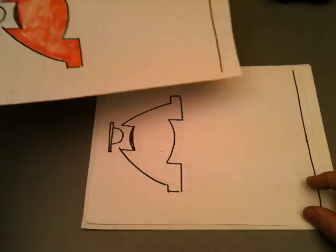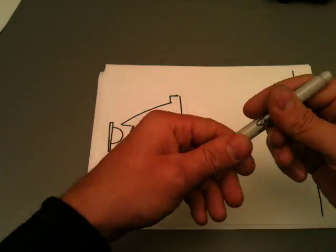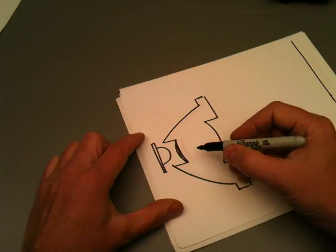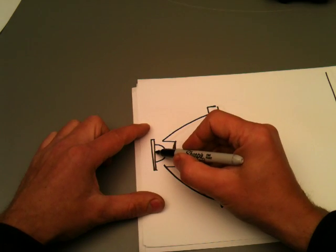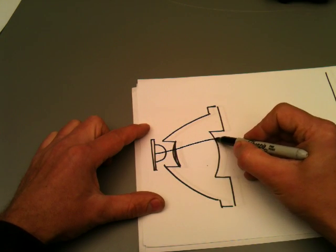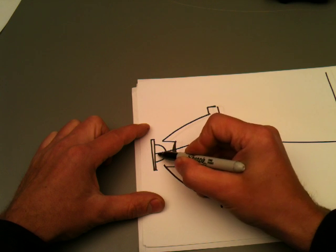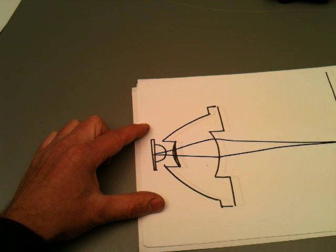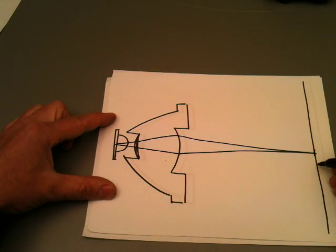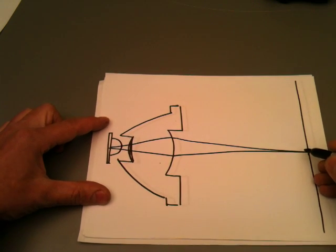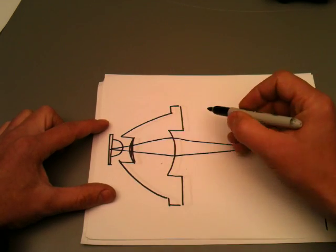So the way it works is that light comes out of the LED and through the center section. It comes out and goes through those lenses and gets focused on the screen over here.